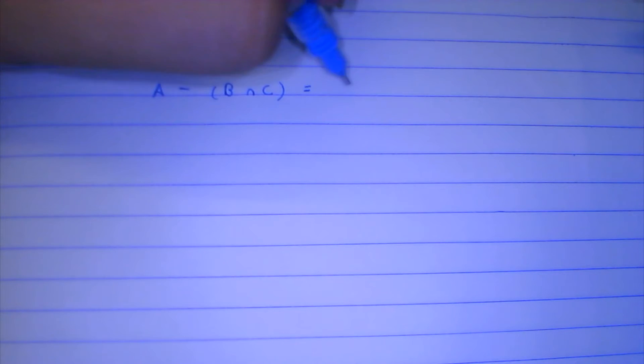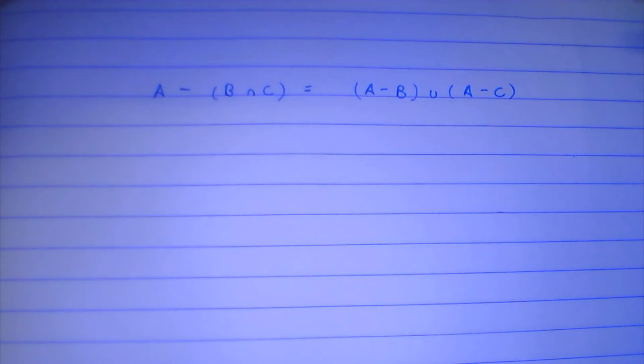Now let's see the second one. In this we are going to be proving that A minus (B intersection C) is equal to (A minus B) union (A minus C). And that's not exactly like distributive law, but it helps.